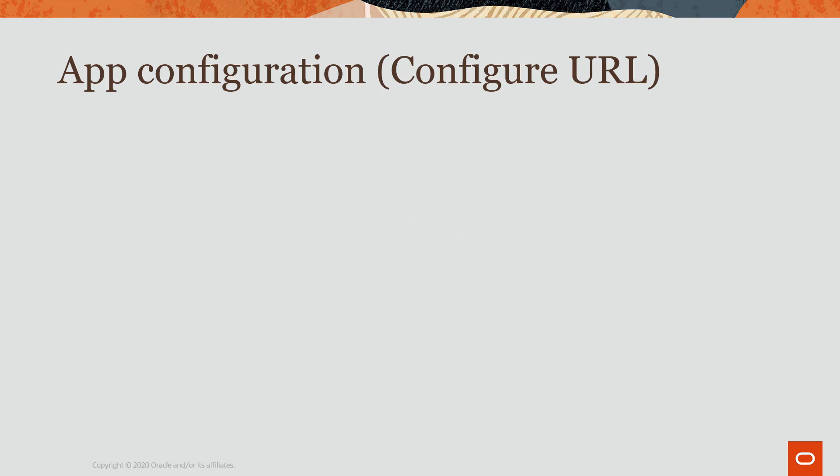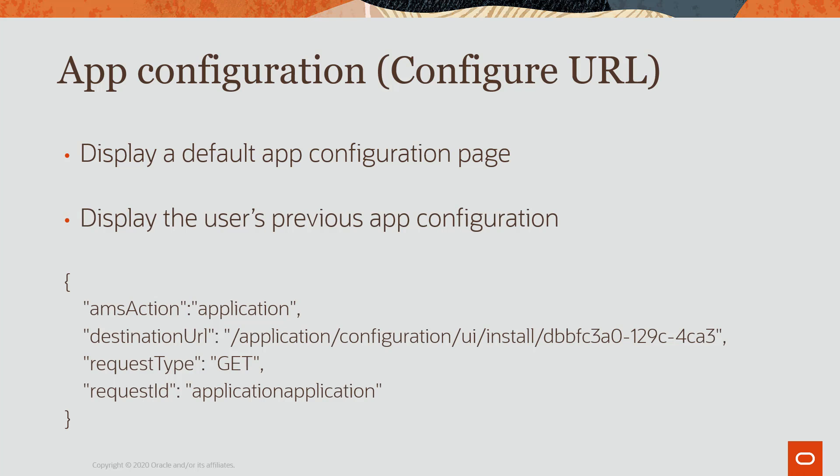When AMS calls an app's configured URL endpoint, apps have two options. Apps can display a default app configuration page, or in the scenario where the user previously configured the app, the app can display the user's previous configuration page.